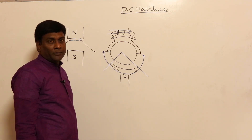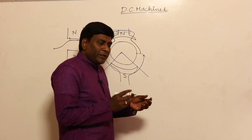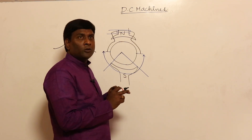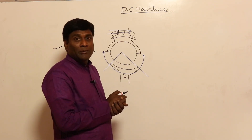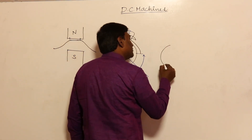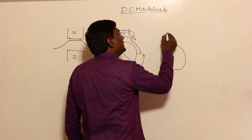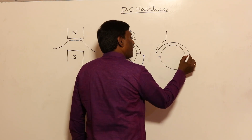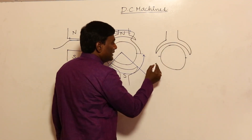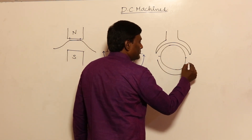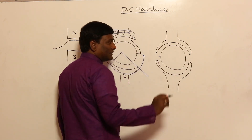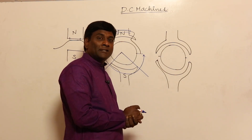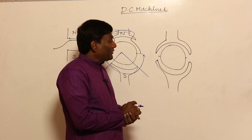Now, coming to the point: if we increase the pole arc to pole pitch ratio, what will happen? Basically, if I increase the pole arc to pole pitch ratio, the flat-topness will be increased. For example, if I have two poles like this — with this kind of wider pole — the pole arc to pole pitch ratio is increased, and so flat-topness is going to be increased.